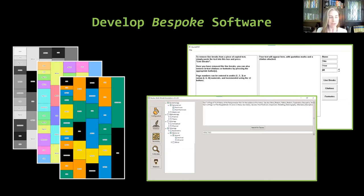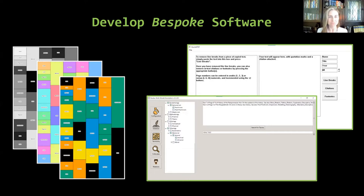I really do advocate developing software as you're going along with your project to solve the problems that you're actually facing. I also really advocate that humanities scholars should learn to program — not just hack together or cut and paste other people's code. That's a fine way to start, but learning how to program because you as a historian or a literature scholar or a linguist know the problem that is facing you.